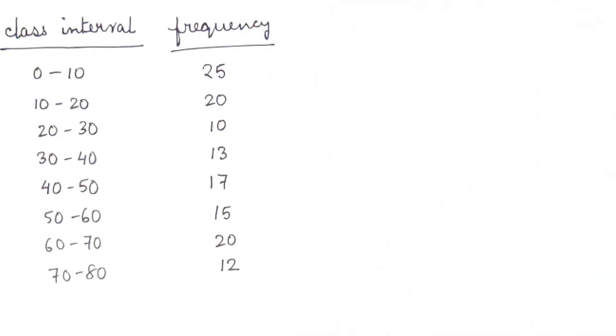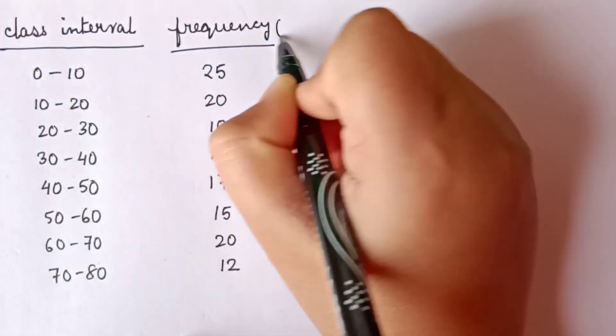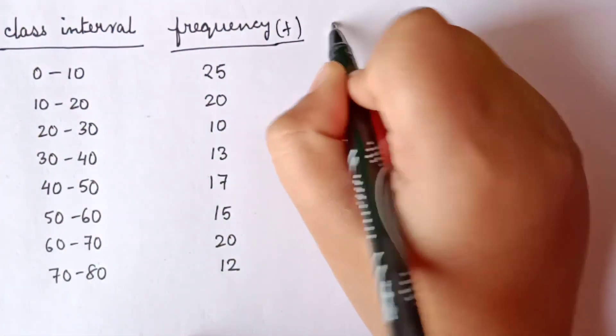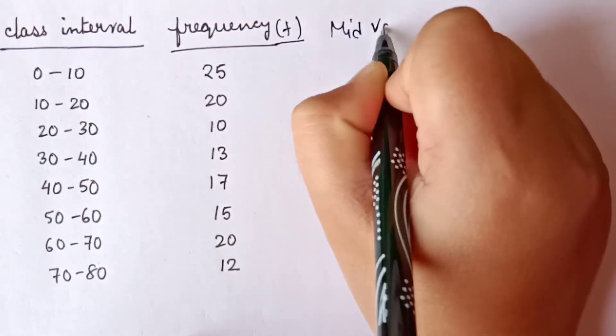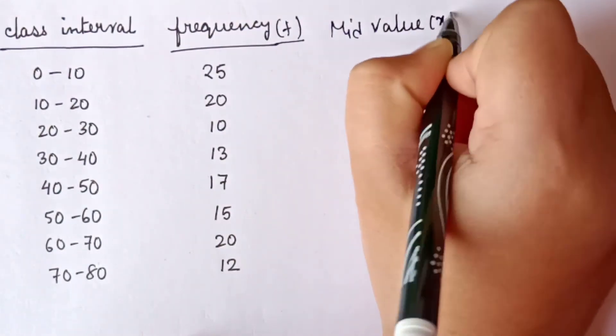Let us discuss another question where class interval is given: 0 to 10, 10 to 20, 20 to 30, 30 to 40, 40 to 50, 50 to 60, 60 to 70, 70 to 80, and their corresponding frequency values are given. First of all, frequency is denoted by F. We will find out the mid value of the class interval.